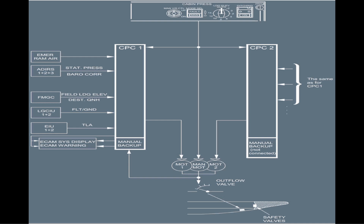Alle Informationen werden natürlich auch auf dem ECAM angezeigt sowie an den Warning Computer gegeben. Wenn die Kabinenhöhe unermesslich steigt, muss die Warnung angezeigt werden. Alle Informationen von jedem einzelnen Informationsträger gehen separat auch an den Cabin Pressure Controller 2 – für echte Redundanz – trotzdem kommunizieren die Controller untereinander über das Crosslink-Kabel.